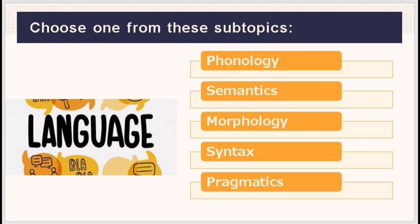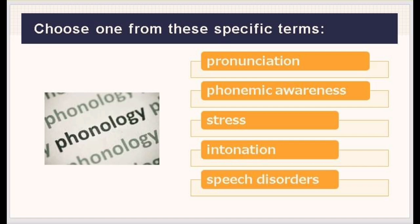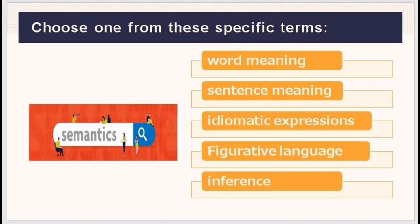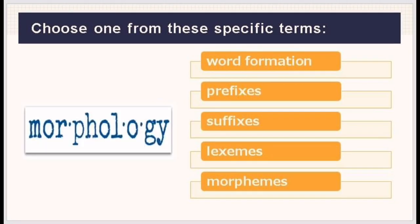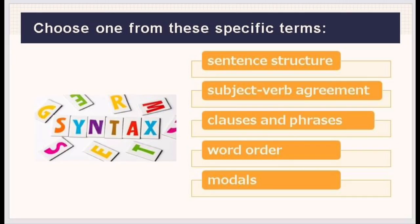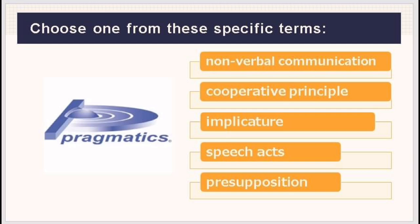Since I chose language, the subtopics under this broader topic are phonology, semantics, morphology, syntax, and pragmatics. Afterwards, I will read articles and existing studies about these subtopics. Eventually, after my research, I may come across very specific topics. For instance, in phonology, I may encounter terms like pronunciation, phonemic awareness, stress, intonation, and speech disorders. For semantics: word meaning, sentence meaning, idiomatic expression, figurative language, and inference. For morphology: word formation, prefixes, suffixes, lexemes, and morphemes. For syntax: sentence structure, subject-verb agreement, clauses and phrases, word order, and modals. For pragmatics: non-verbal communication, speech acts, implicature, cooperative principle, and presupposition.